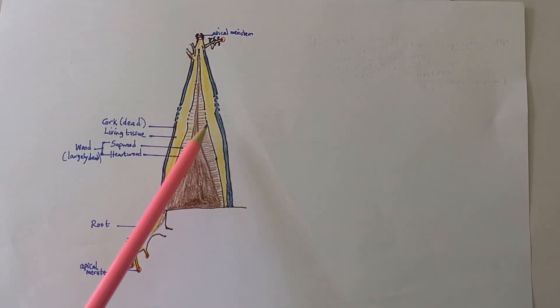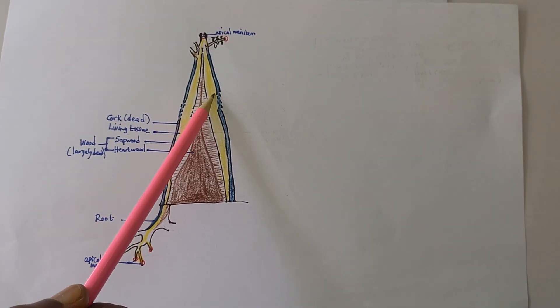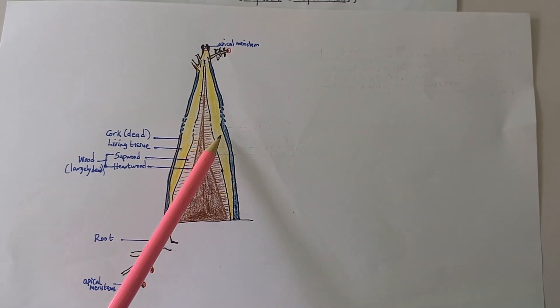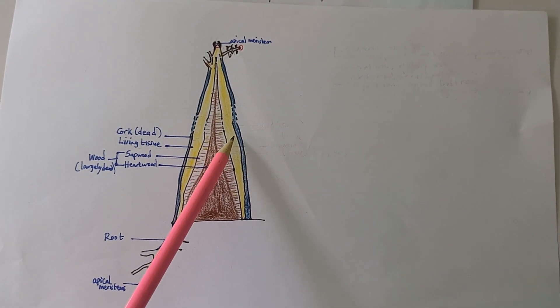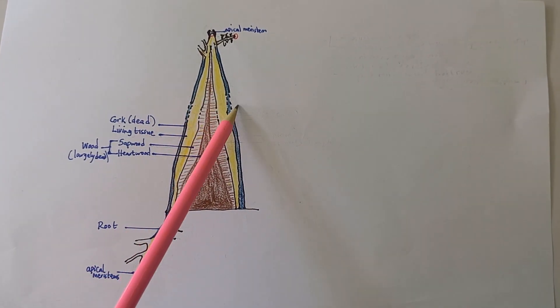Other conditions that must be met are the following. There should be a protective structure that protects the tree, that is the cork. It protects the inner tissues from losing too much water by evaporation and also protects the inner tissues from pathogens.